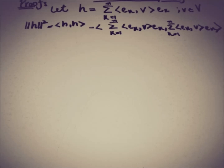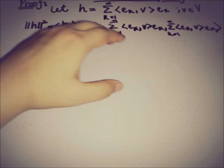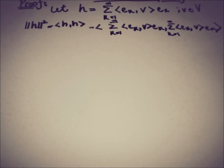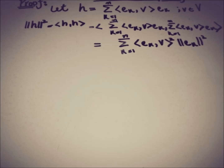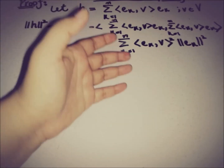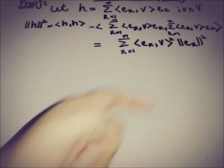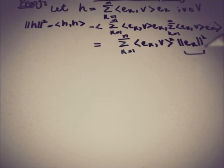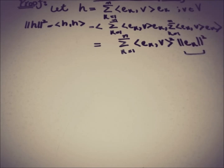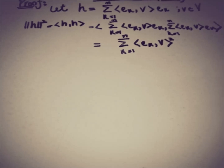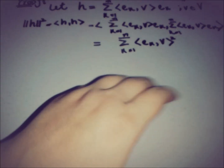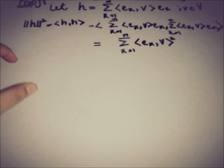This simplifies because the terms are the same, so we can write it as the sum from k = 1 to n of |⟨e_k, v⟩|² times ||e_k||². Since {e_k} is orthonormal, ||e_k||² = 1, so we replace it with 1. This whole expression is equal to ||h||².